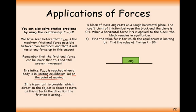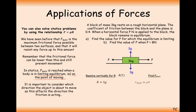Let's draw a diagram. We've got a 3-kilogram block with a weight of 3g newtons. The coefficient of friction between the block and the ground is 0.4. We need to know R — R here will balance out with the 3g force downwards. We've got a force P pulling it to the right, so friction is going to be acting to the left. Resolving vertically, R equals 3g. So the maximum value of friction will be 0.4 times 3g, which is 11.76.